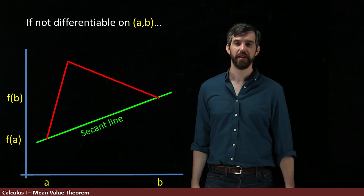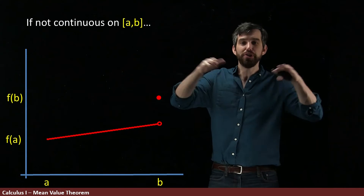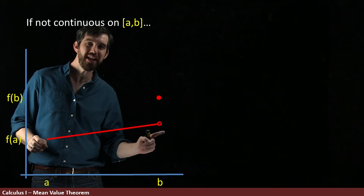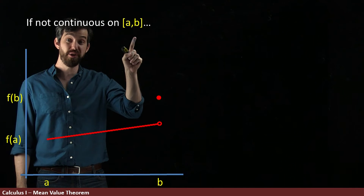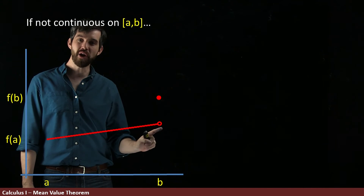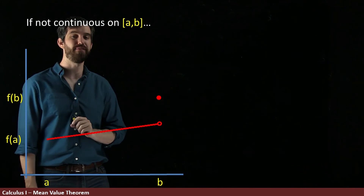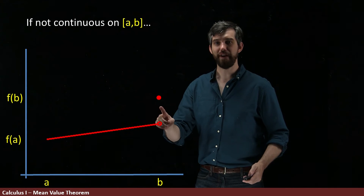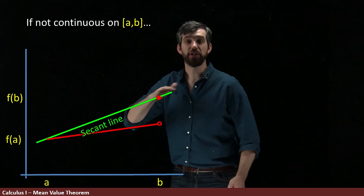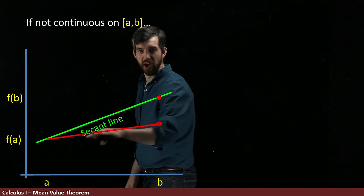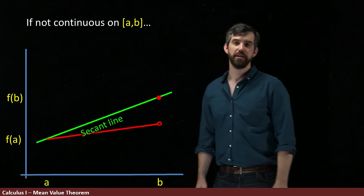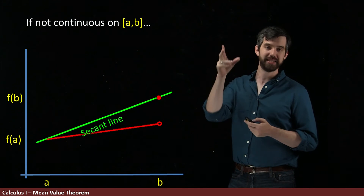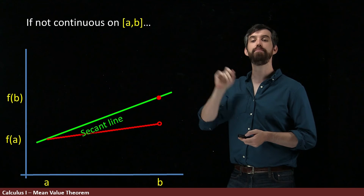What about the continuity condition? Consider a function that is not continuous on the closed interval [a, b] — specifically, it has a break at the endpoint b. Because the actual value of f(b) jumps up, the secant line has to pass through that higher point, while all the tangent lines remain down on the lower portion of the graph. So if the function is not continuous on the entire closed interval [a, b], we can demonstrate an example where the Mean Value Theorem fails — and thus we need both conditions.